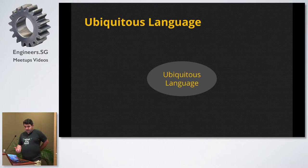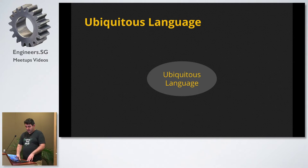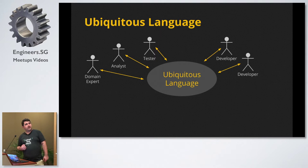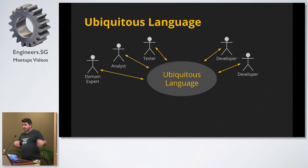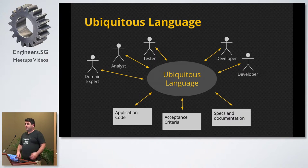Once you have your common language — ubiquitous language — it's good to keep that language consistent between all the parts involved in building your application. If you talk to a developer, tester, analyst, domain expert, or stakeholder, all parties should use exactly the same language. That same language should land in your code, acceptance criteria, specs, and documentation. Avoid the translation cost as much as possible.